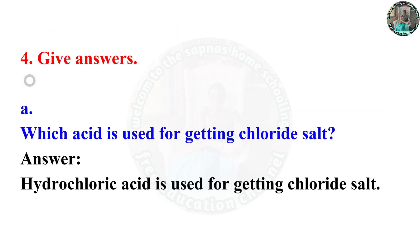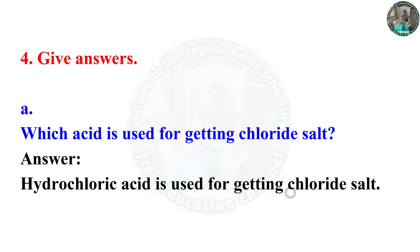Question 4: Which acid is used for getting chloride salt? Hydrochloric acid is used for getting chloride salt.